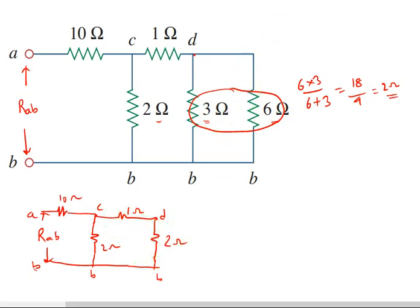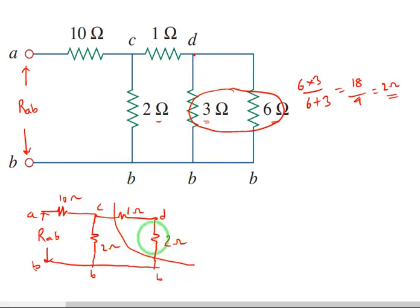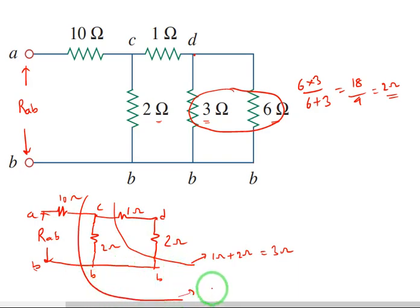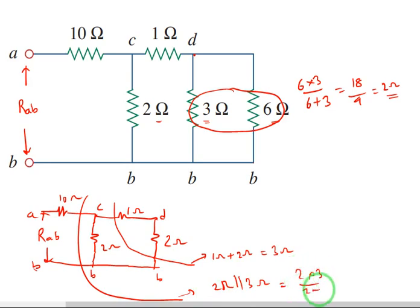Three parallel to six gives two ohms, so one ohm and two ohms are now in series. One ohm plus two ohm equals three ohms. This three ohms is then in parallel with the two ohms resistor, giving two ohm parallel to three ohm equals two into three divided by two plus three, that is six by five, which is 1.2 ohms.